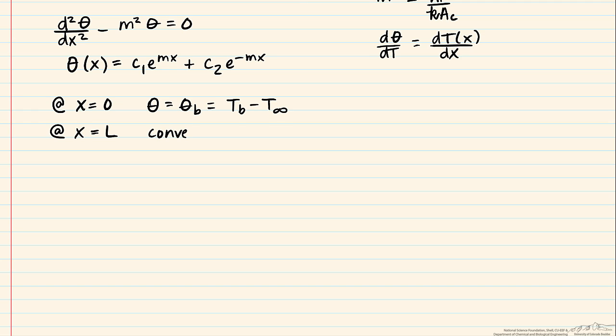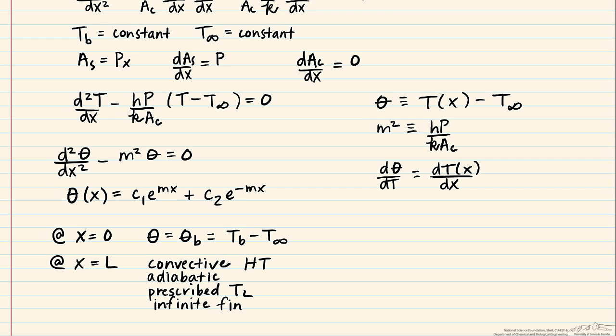So one of them is that we have at the tip convective heat transfer. Another condition is that the tip is adiabatic. A third case is that we have some prescribed constant temperature T sub L, and finally we have what's known as an infinite or a very long fin. So using one of these four boundary conditions, we get a different solution, and the temperature distribution as well as the heat transfer rate of the fin can be found in appropriate tables.